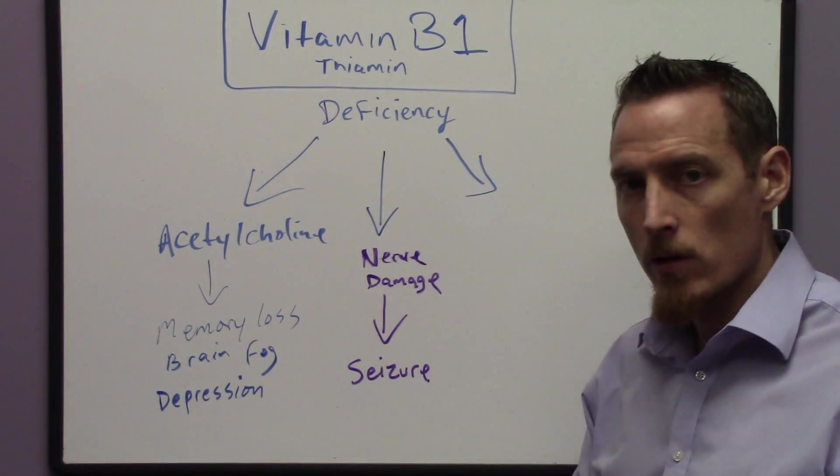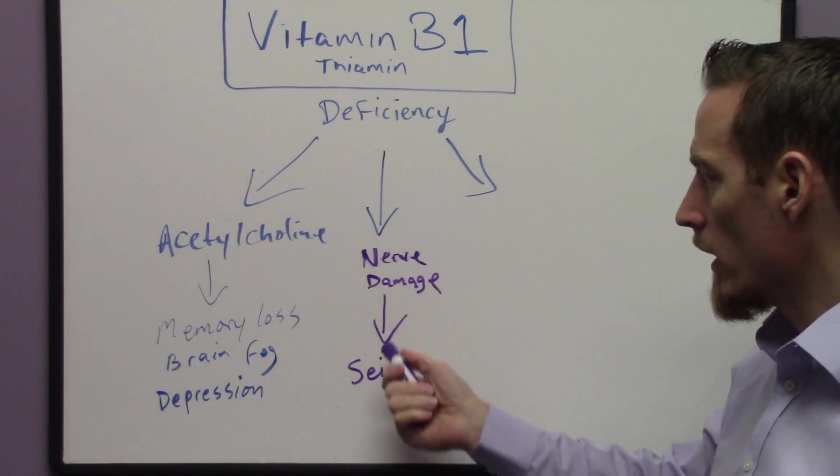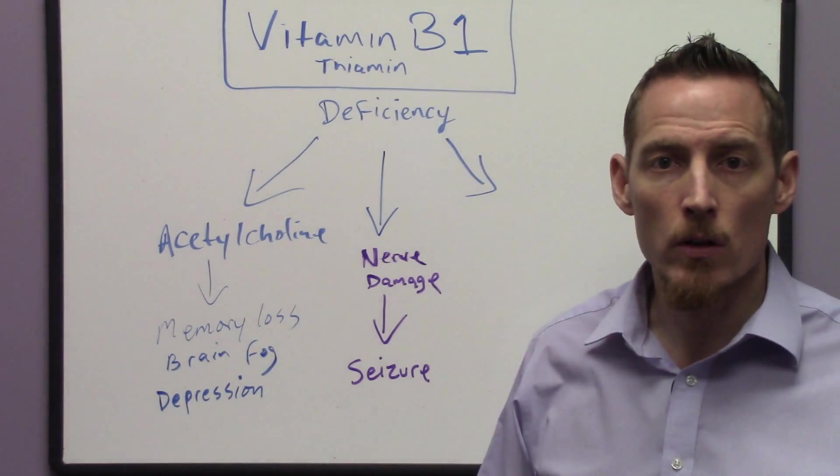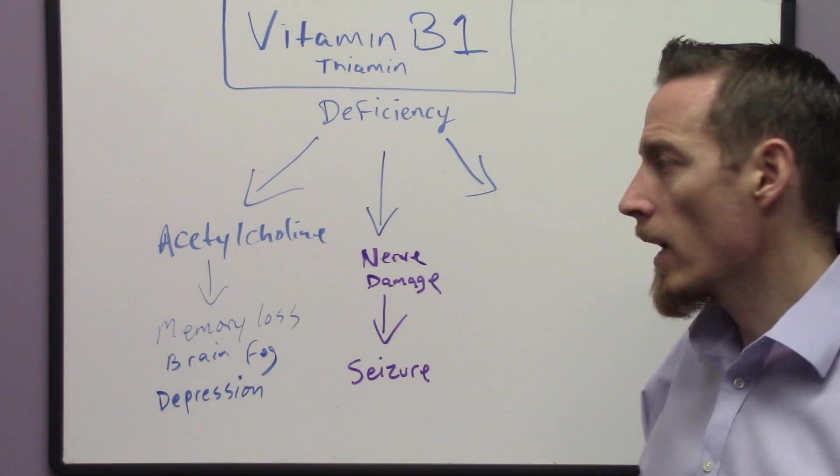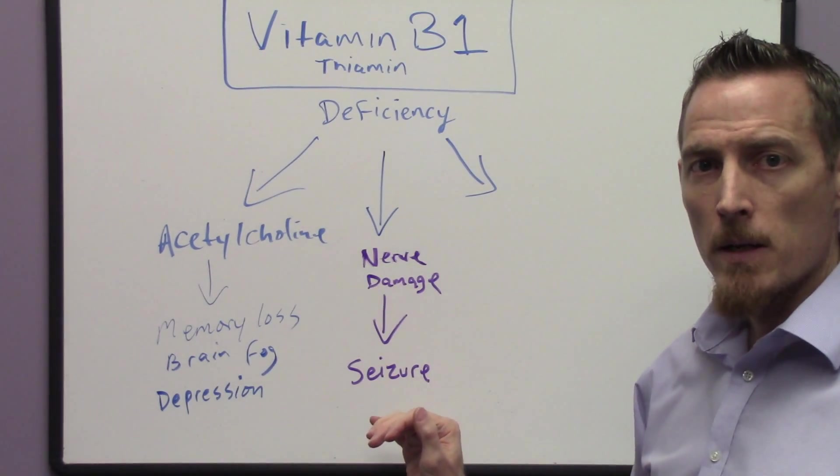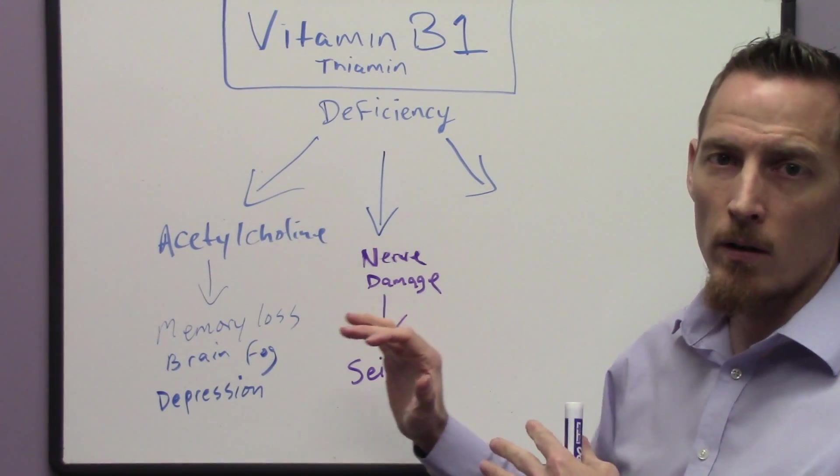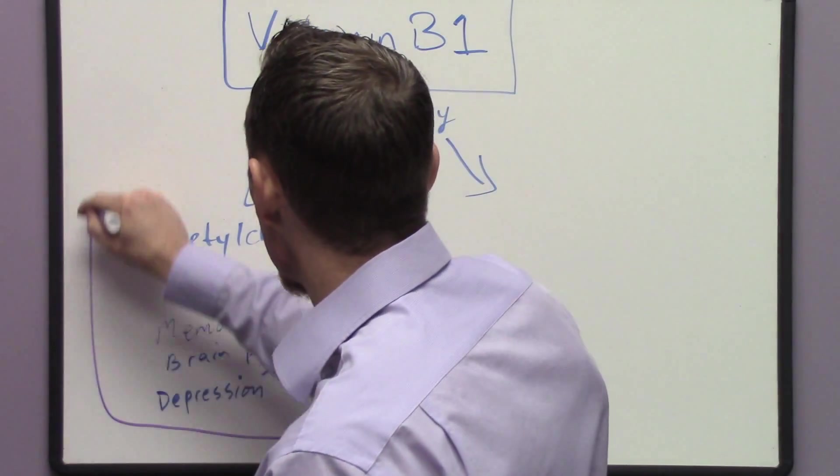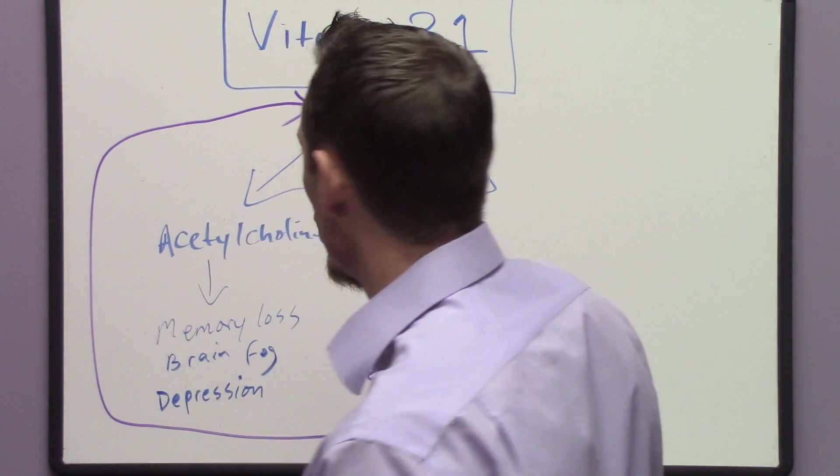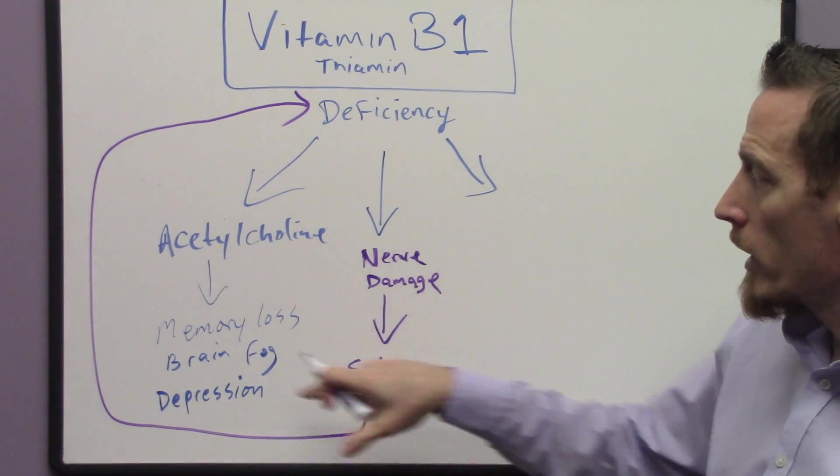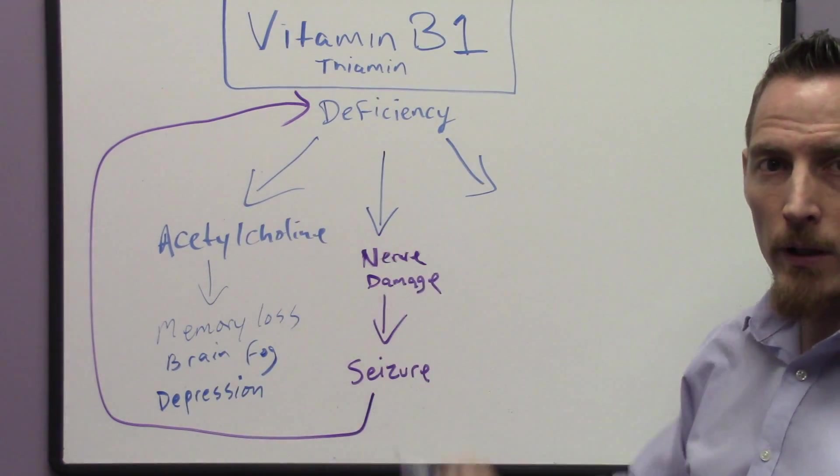So individuals with B1 deficiency over a long enough period of time can actually have nerve damage and that can trigger what looks or appears to be a seizure type disorder. Problem with that is, if we don't investigate B1 in patients that have seizure already, putting a patient on an anti-seizure medication can actually lead to a vitamin B deficiency. So again, we can recreate a problem if we don't properly investigate.